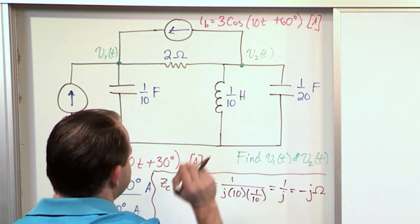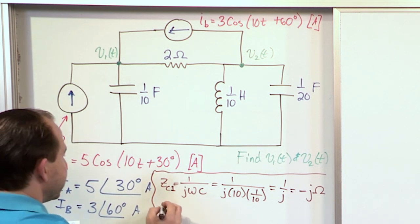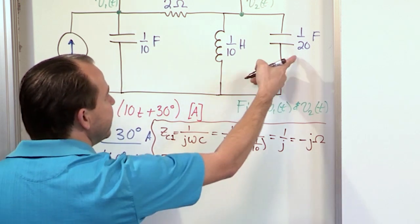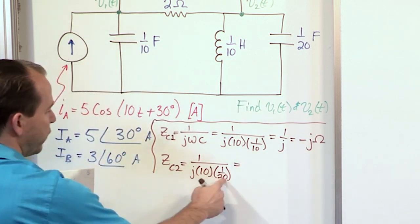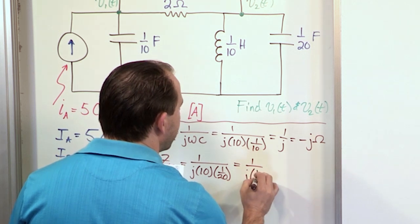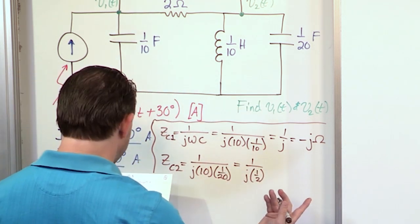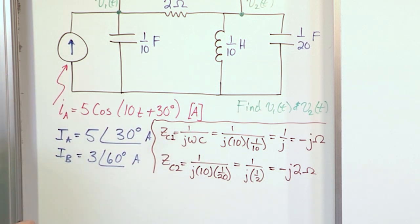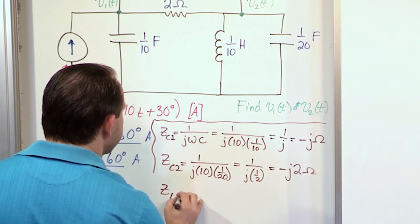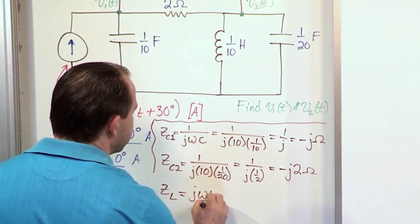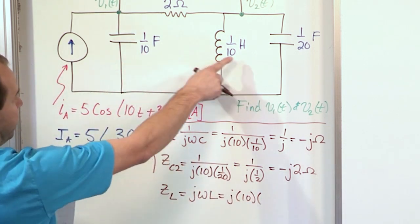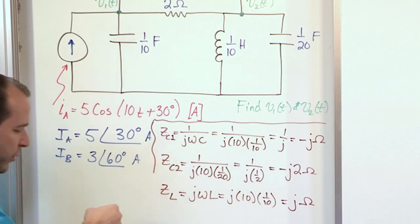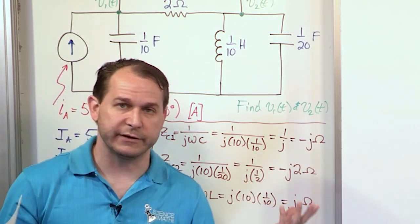There are actually two capacitors, so let's label this C1 and compute capacitor C2. Its impedance is also 1/(jωC), with ω = 10 and C = 1/20. So we get 1/(j·10·(1/20)) = 1/(j·(1/2)). Dividing by 1/2 gives 2, and moving j upstairs gives negative j, so Z_C2 = −j2 ohms. For the inductor, Z_L = jωL = j·10·(1/10) = j ohms. Capacitances give negative imaginary impedances; inductances give positive imaginary impedances — that all makes sense.